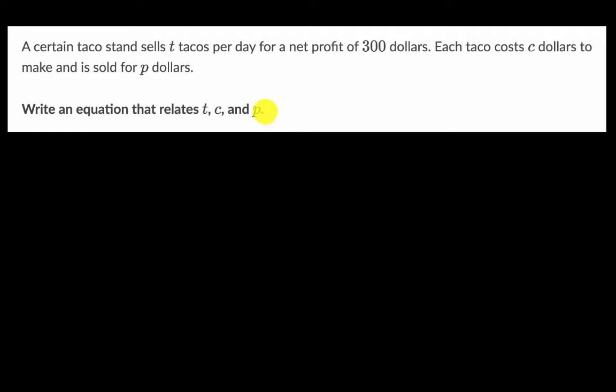All right, now let's work this together. So let's just remind ourselves what's going on here. So we have the number of tacos sold per day is T. So T equals number of tacos sold per day.